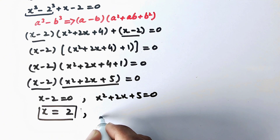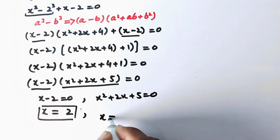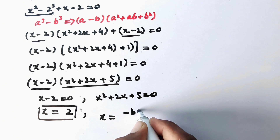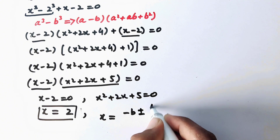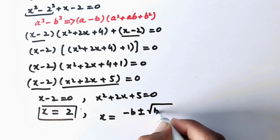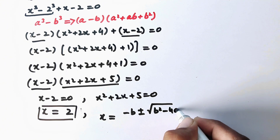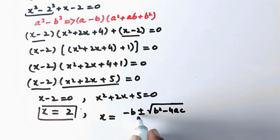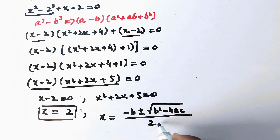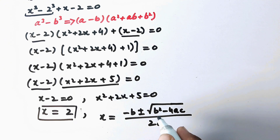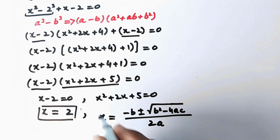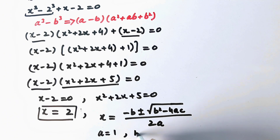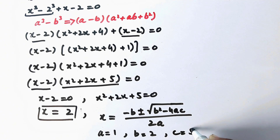The quadratic formula is x equals minus b plus or minus square root of (b squared minus 4ac), divided by 2a. The values here are a equals 1, b equals 2, and c equals 5.